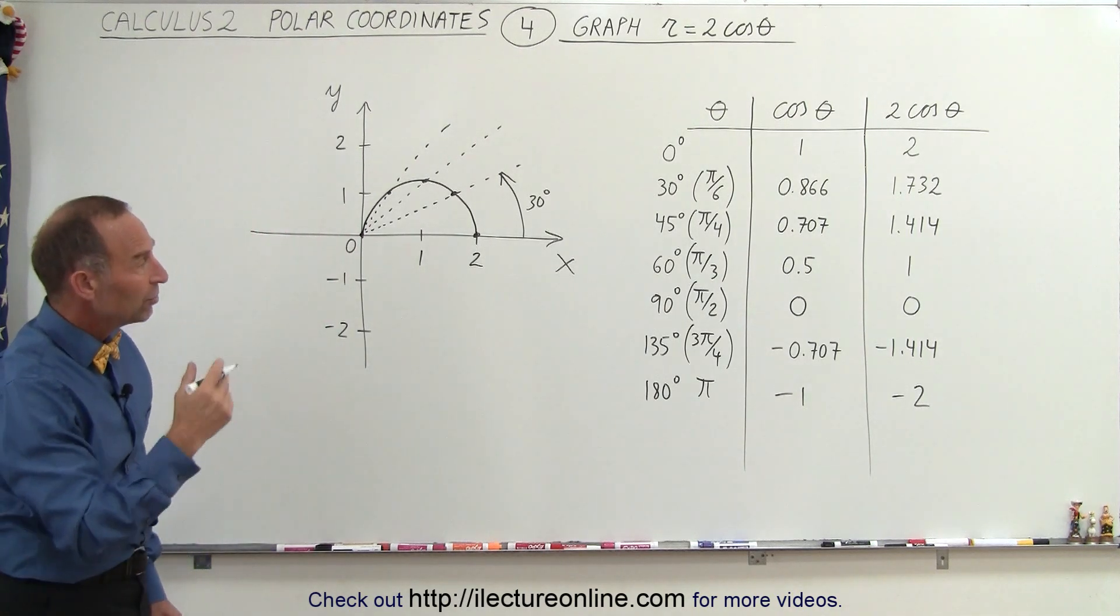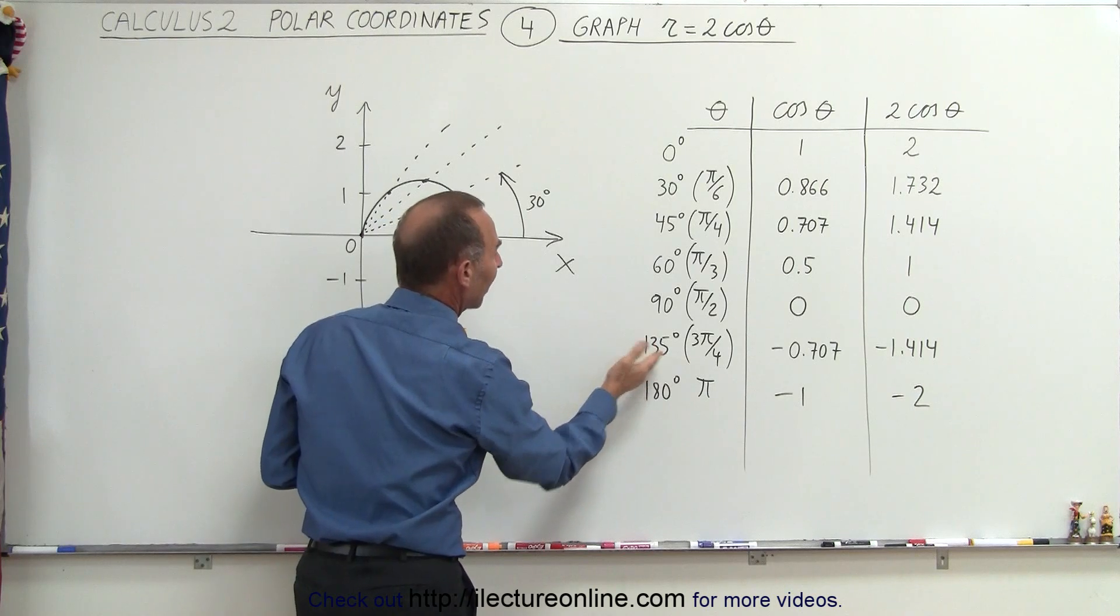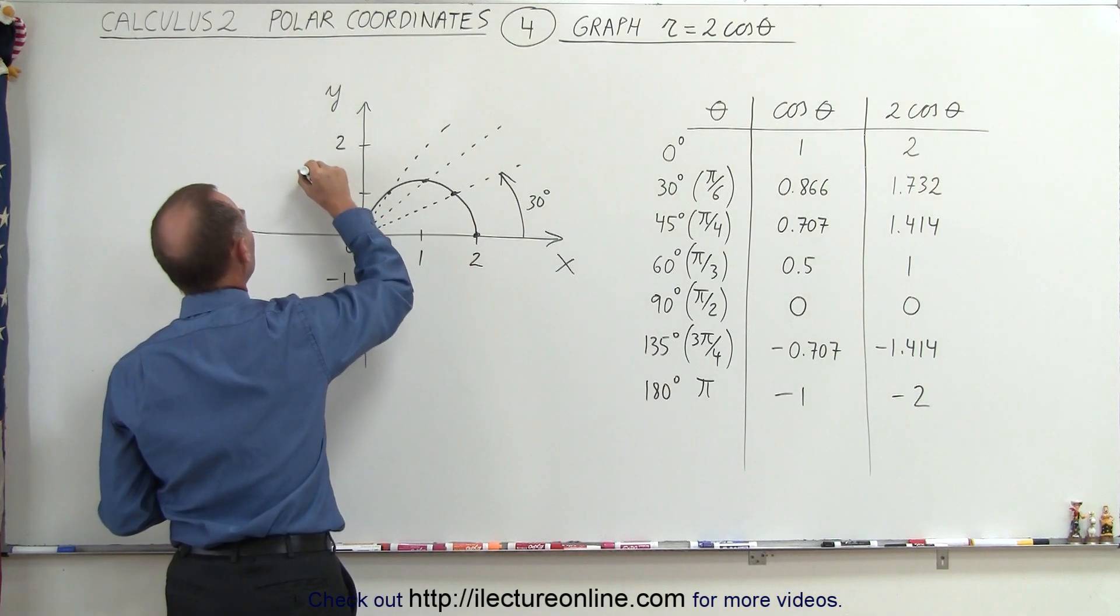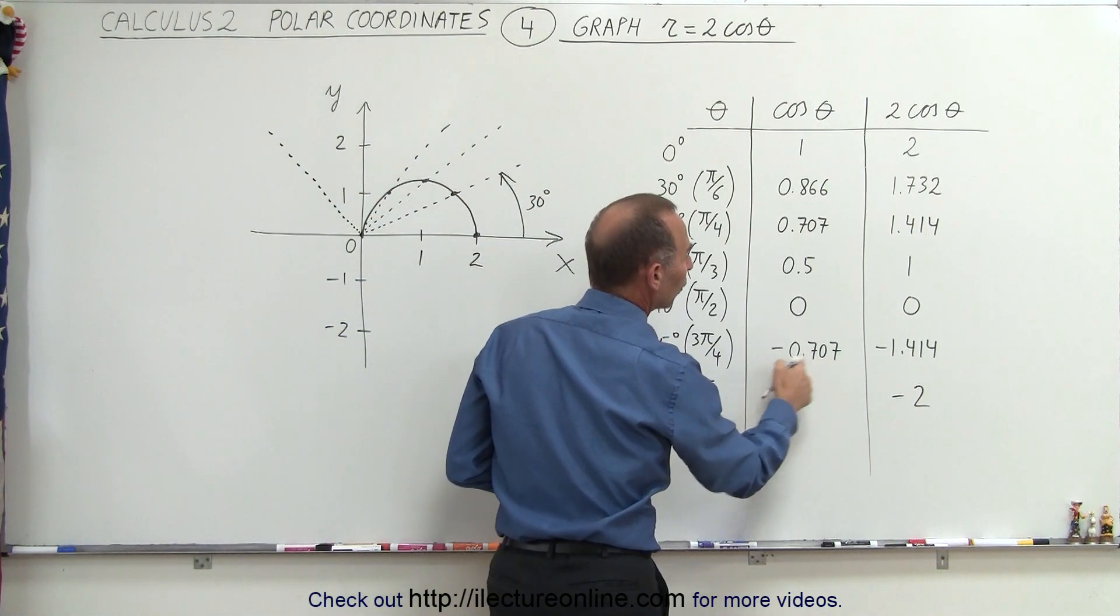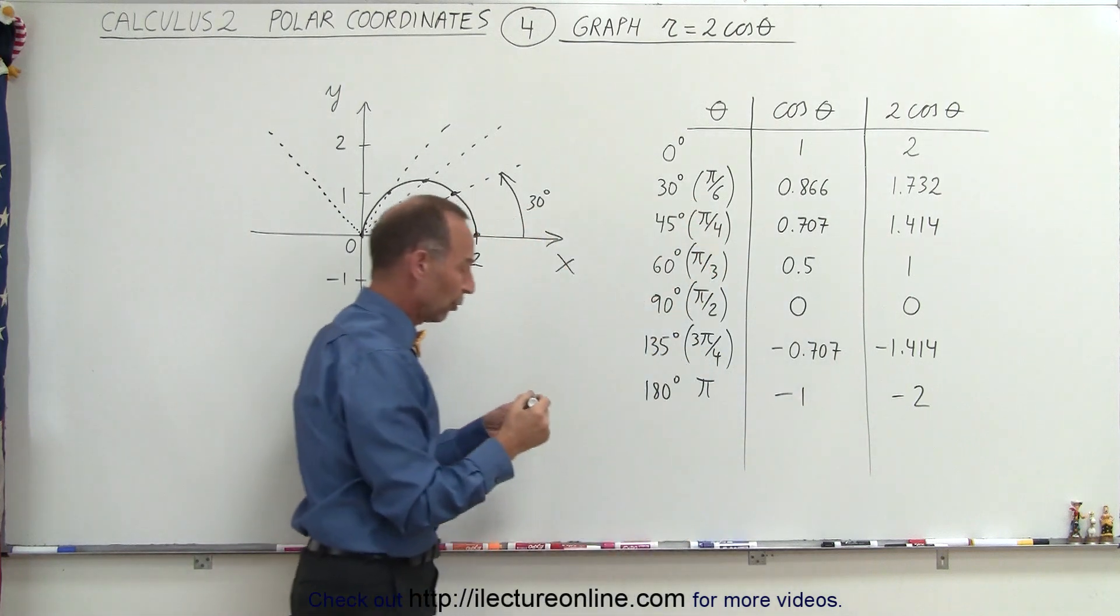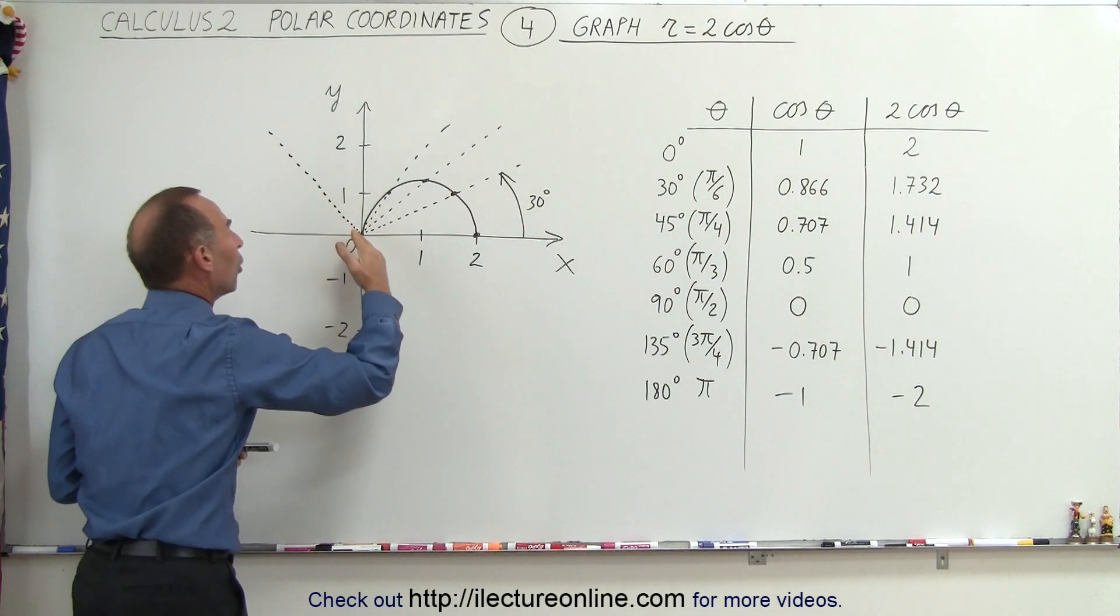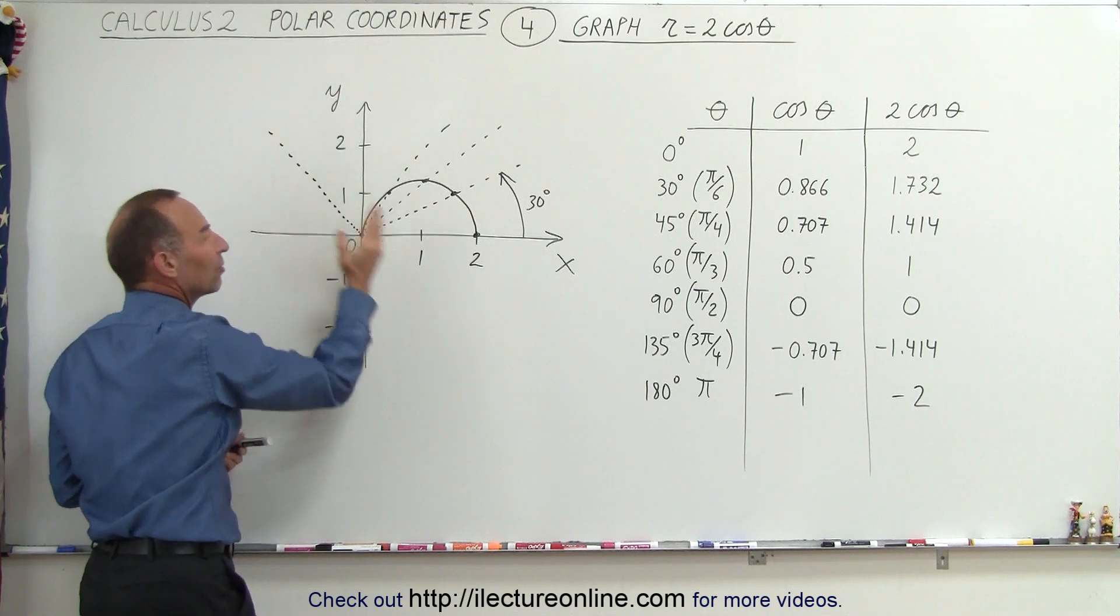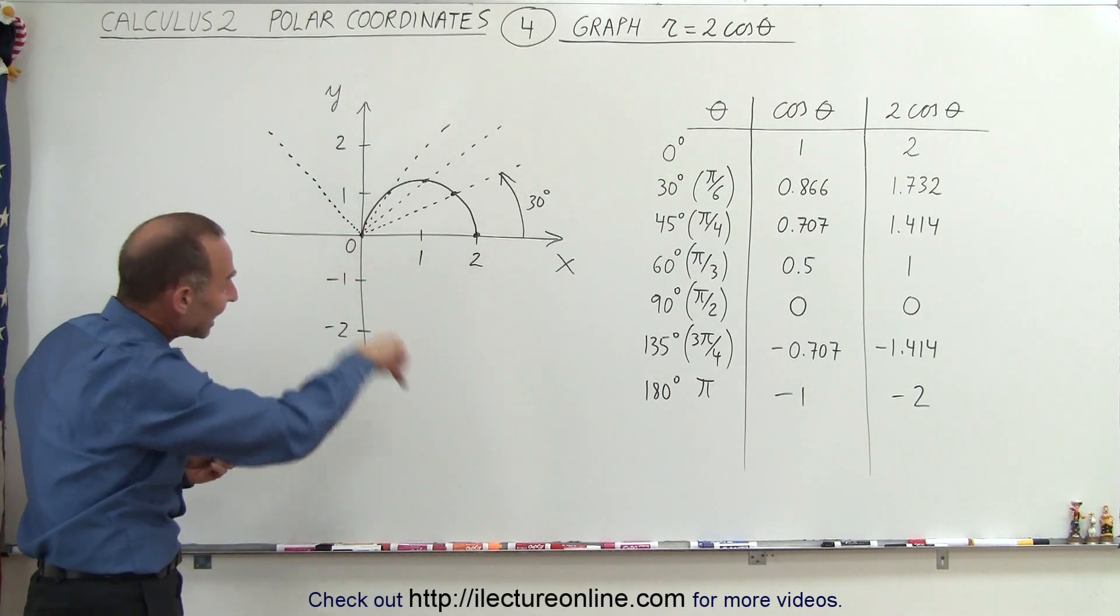So what happens when we continue? Well, now we jump ahead to an angle of 135 degrees, which would be in this direction right here. And now when we take the cosine of that, we get minus 0.707, twice that is minus 1.414. So instead of going in the positive direction, away from the origin, in the direction of the line that's made when we find an angle of 135 degrees, we have to go in the negative, the opposite direction.